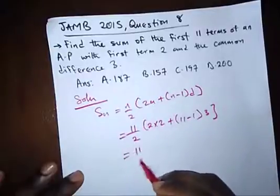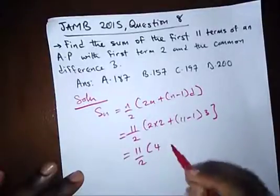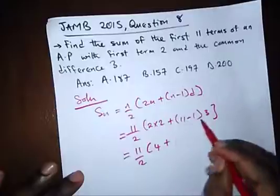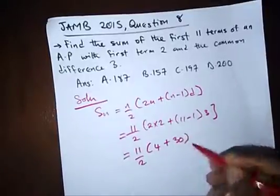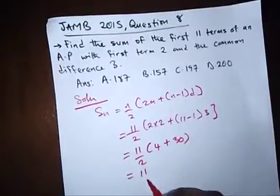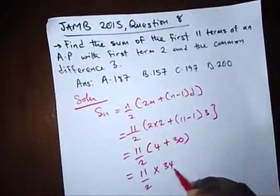So we have 11 over 2 bracket 4 plus, this is 10 times 3, that's 30. So we have 11 over 2 times 34.